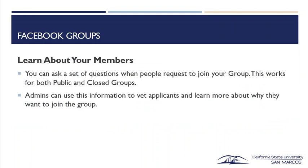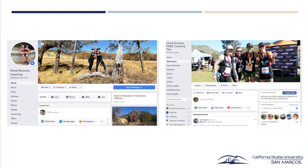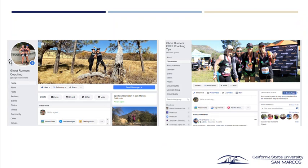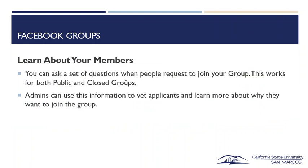You can learn about your members by asking questions and doing polls. You can ask questions when someone wants to join your group — for example, 'are you a runner or a walker?' or 'what are you hoping to learn from this group?' This works for both public and closed groups. Admins can use this information to vet applicants and learn more about why they want to join — maybe your free group only wants people from San Diego, so you ask for their location.